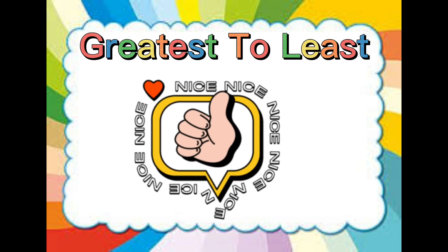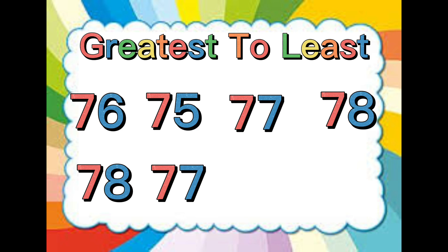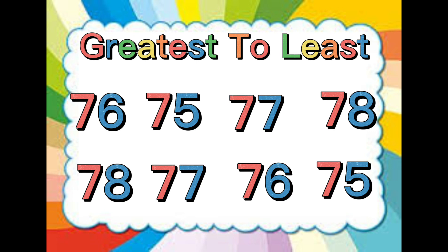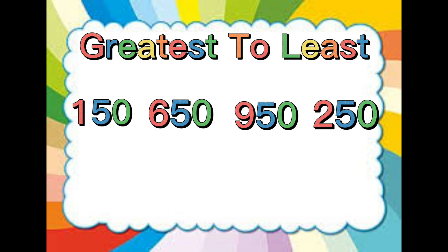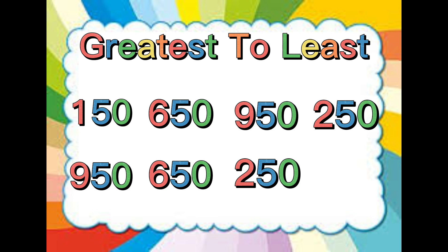You're doing awesome so far. Let's practice some more. Let's arrange these numbers from greatest to least. We have 150, 650, 950, and 250. The greatest number in this set is 950. The next greatest to 950 is 650. The next greatest to 650 is 250. The least number in this set is 150.